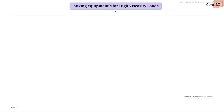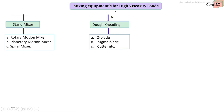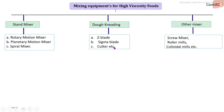The equipment available for mixing high viscosity food products falls into three categories. First is the stand mixer, with rotary motion, planetary motion, and spiral types. Second is the dough kneader, with mixing elements such as the Z-blade, sigma, and cutter. Third is other mixers including the screw mixer, roller mill, and colloidal mill. The appropriate equipment is selected based on the raw material's physical properties.